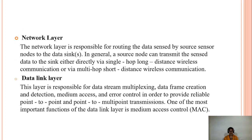The network layer is responsible for routing data sensed by source sensor nodes to the data sink. A source node can transmit sensor data to the sink either directly via single-hop long-distance wireless communication or via multi-hop distances. The data link layer is responsible for data stream multiplexing, data frame creation and detection, medium access, and error control. It provides reliable point-to-point and point-to-multipoint transmissions. One of the most important functions of the data link layer is MAC — medium access control.